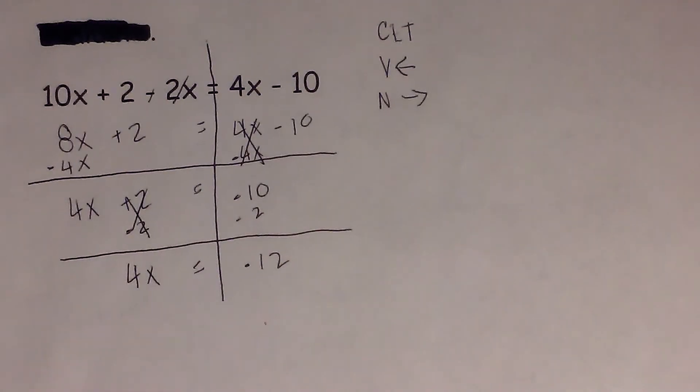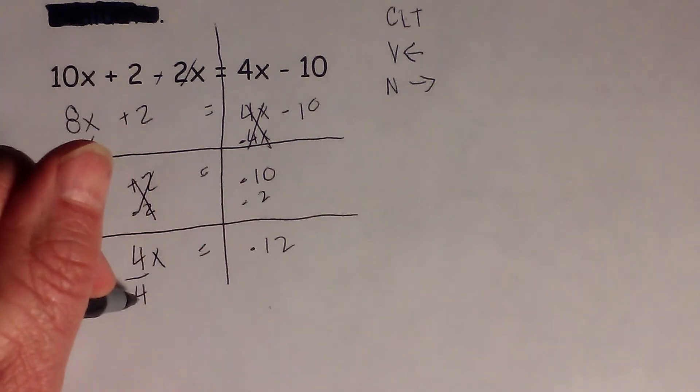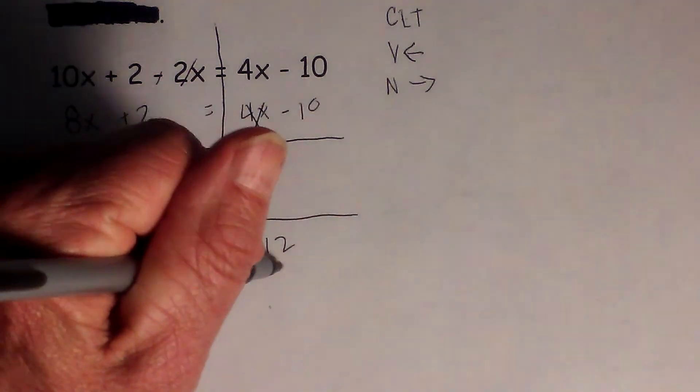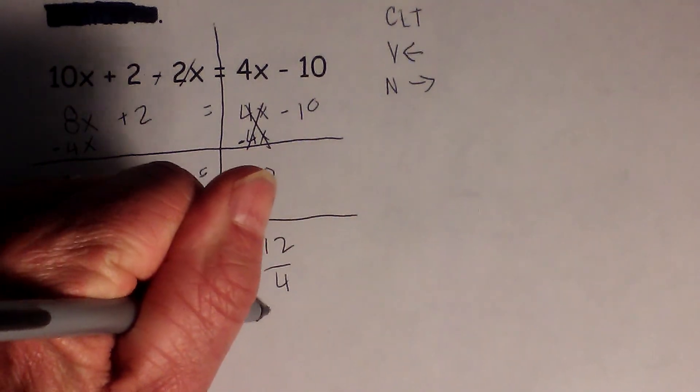Now all we need to do is get x by itself, and we can do that by dividing by 4. What you do to the left, do to the right. X equals negative 3.